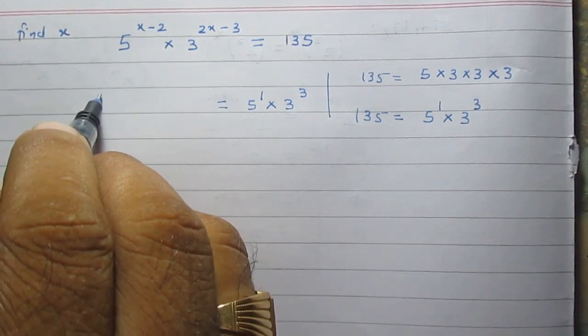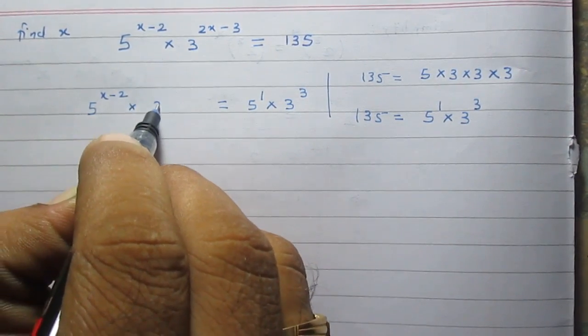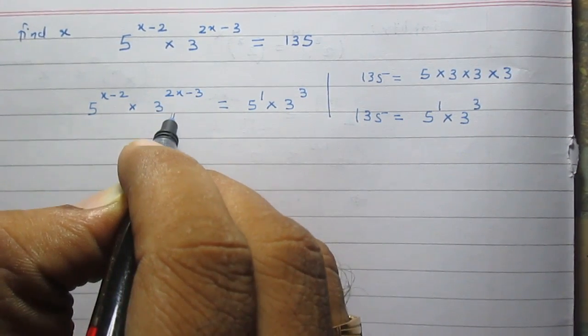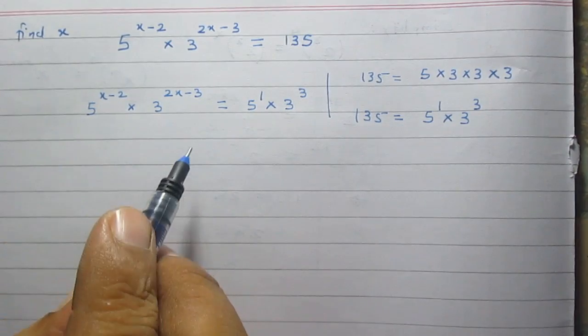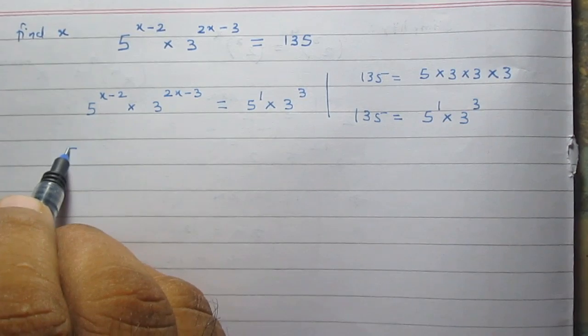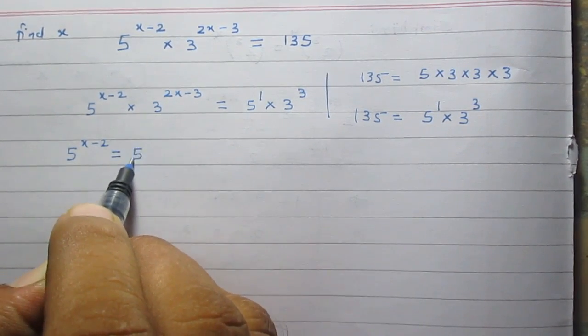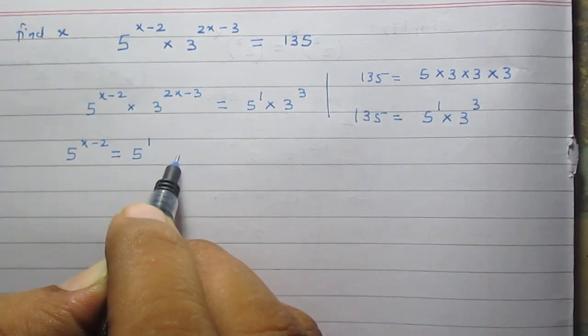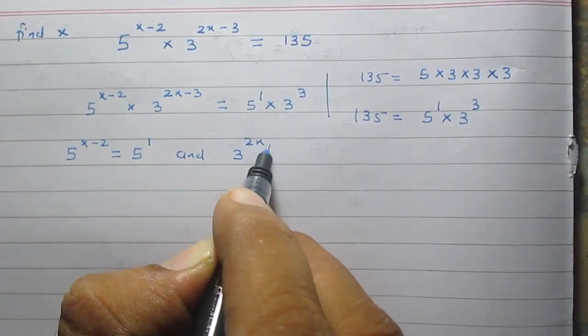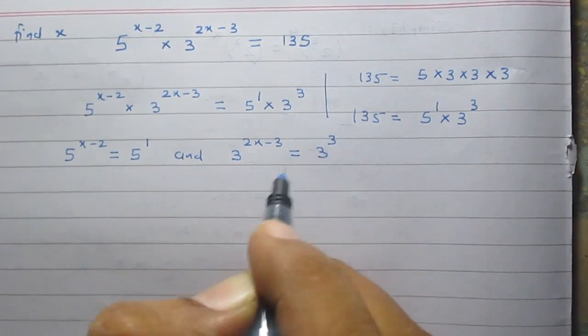The left hand side is 5 raised to the power x minus 2 multiplied by 3 raised to the power 2x minus 3. If we compare this result we can say that 5 raised to the power x minus 2 must be equal to 5 raised to the power 1 and 3 raised to the power 2x minus 3 is equal to 3 raised to the power 3.